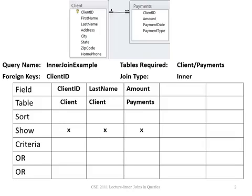Notice in this query we're using the client and payments table. We have a foreign key because we're joining — the foreign key is client ID and the join type is inner. Notice the client table and the payments table at the top. There is a line drawn between them showing a one-to-many relationship. For every client we could have zero, one, or many payments.